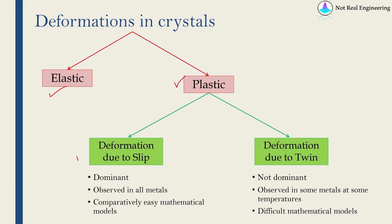In most metals, deformation due to slip is very dominant. Almost all the time, whenever you hear about plastic deformation in metal, it is due to slipping. Deformation due to twin is not that dominant — it is observed only in some metals and also at some specific temperatures. So you can see twin is kind of rare. As slip is very common, there are many mathematical models available for slip and they are comparatively easy, whereas mathematical models for twin are a little bit more difficult.